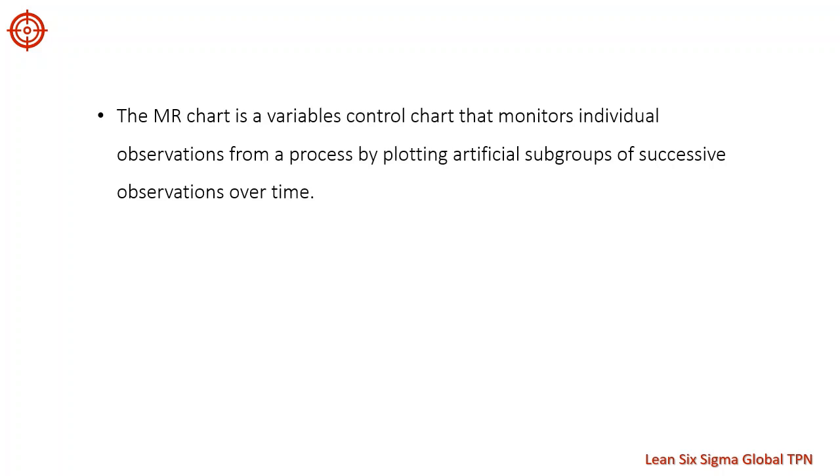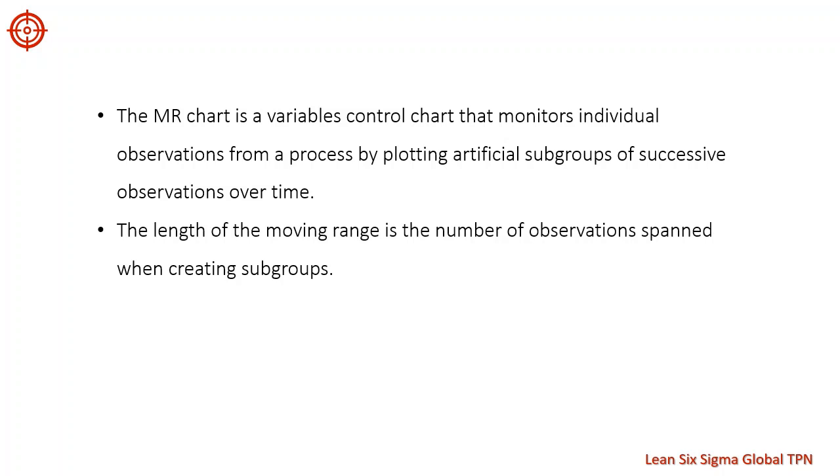Let's review. The MR chart plots artificial subgroups of successive observations over time to monitor process variation. The length of moving range is the number of observations we span when creating our successive subgroups. By looking for out of control points and patterns in variation, we can use MR charts to help us spot unwanted sources of variation in our process.